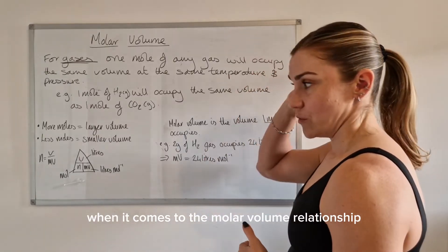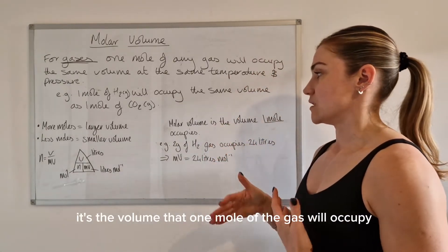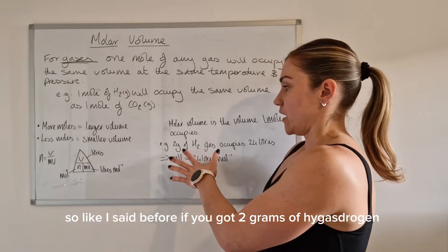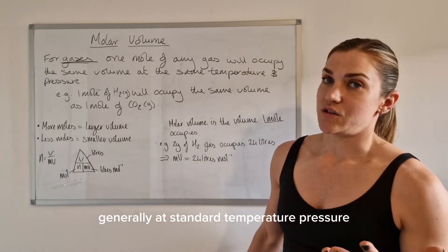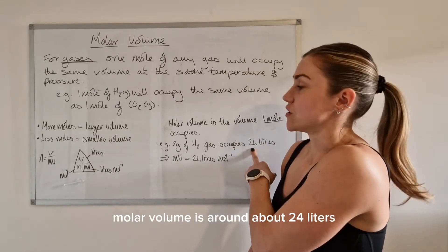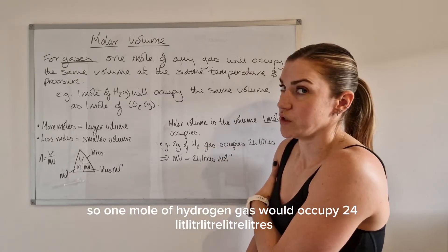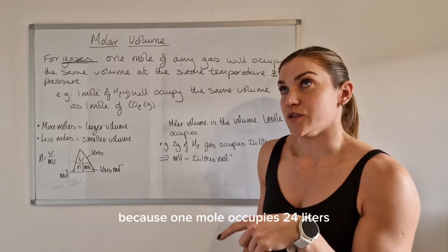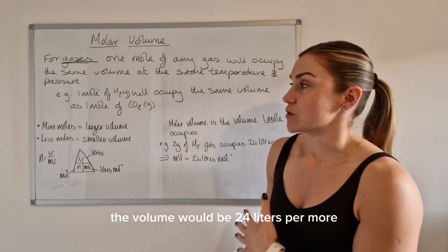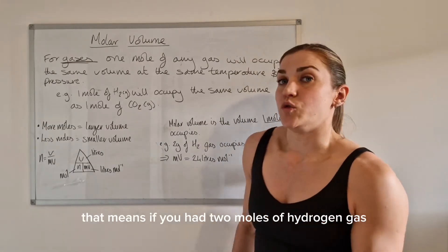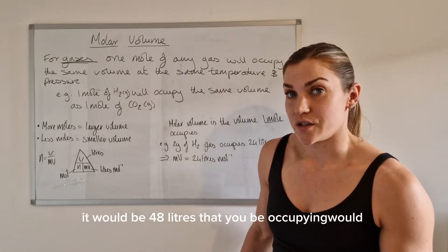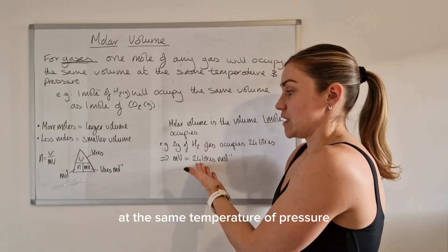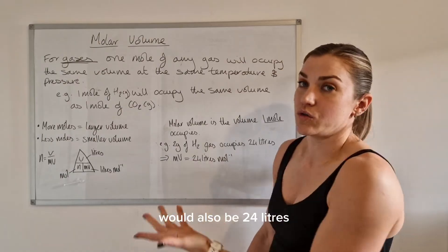When it comes to the molar volume relationship, molar volume is the volume that one mole of the gas will occupy. At standard temperature and pressure, molar volume is around 24 litres, so one mole of hydrogen gas would occupy 24 litres — its molar volume is 24 litres per mole. That means if you had two moles of hydrogen gas, it would occupy 48 litres. One mole of carbon dioxide gas at the same temperature and pressure would also be 24 litres.